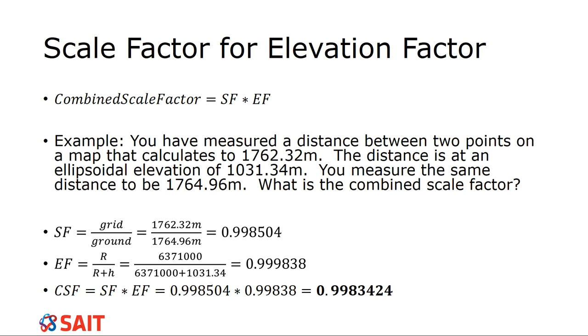Here's an example. The combined scale factor is putting it all together. We actually use the scale factor and the elevation factor. I'm going to put them all together here because an elevation factor on its own doesn't really make any sense. You're actually going to find the combined scale factor on the ASCM sheets because it does include that. Let's say you have to measure a distance between two points on a map that calculates to 1762.32 meters. The distance is at an ellipsoidal elevation of 1031.34 meters. You measure the same distance to be 1764.96 meters. What is the combined scale factor?